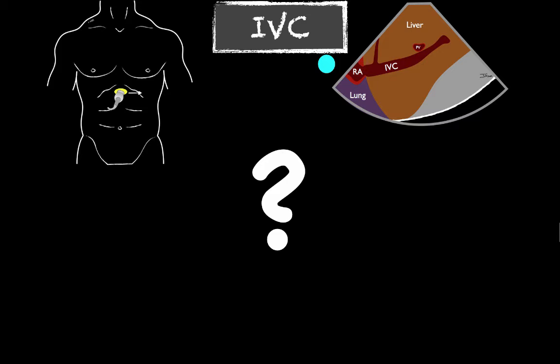Lastly, we unfortunately didn't have an IVC view of this echo, but the next view would be the inferior vena cava to assess volume status. Does the IVC collapse with respiration? Is it plethoric or distended without any collapse? That will help you determine whether the pericardial effusion is causing tamponade physiology — something pretty critical to understand in the context of a bedside cardiac ultrasound.